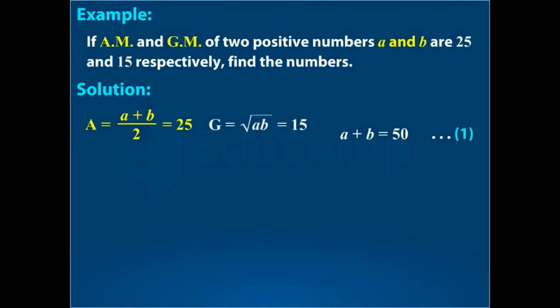And geometric mean is 15, so the square root of A into B is equal to 15. On squaring both sides, we get A into B is equal to 225. Name this equation 2.